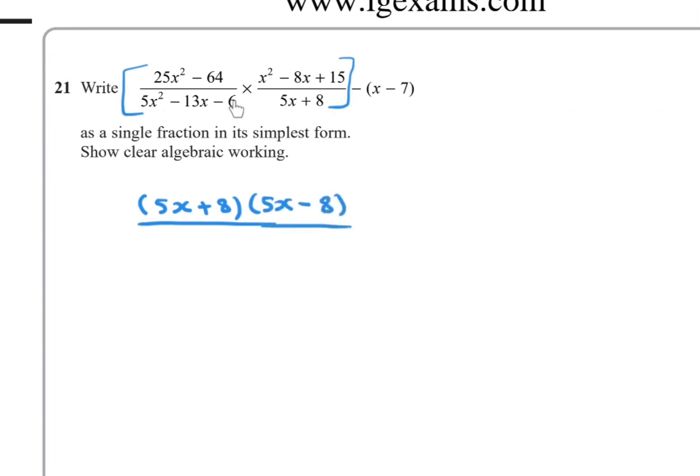Now for the denominator, no common factor. This trinomial you can factorize using your calculator. So mode 5-3 and enter a = 5, b = -13, c = -6. I have two values for x: the first value -2/5 and the second value equals 3.